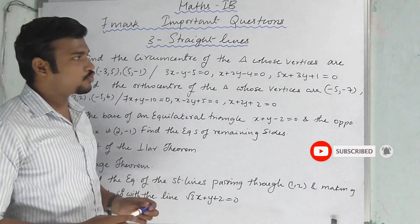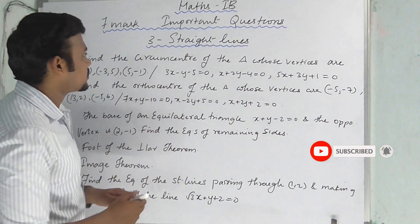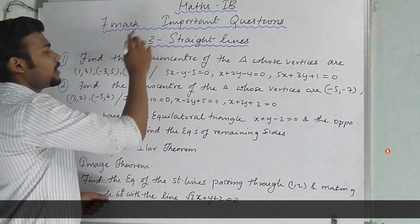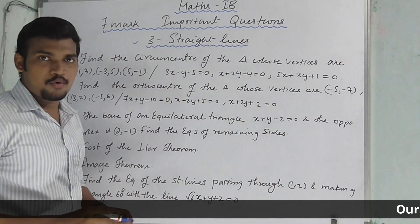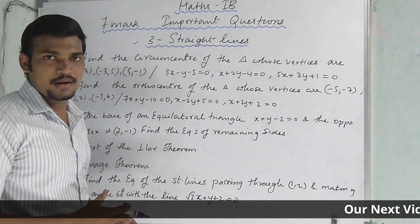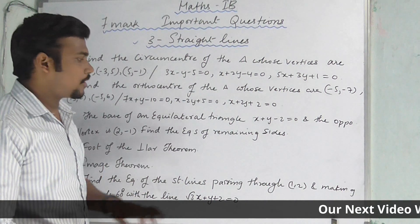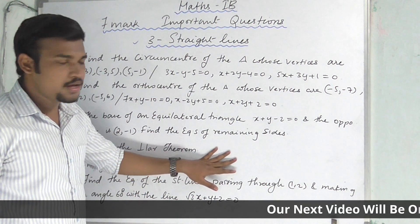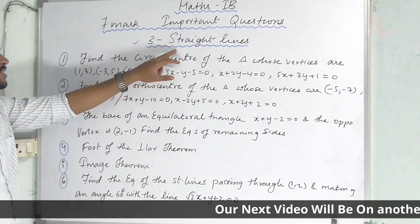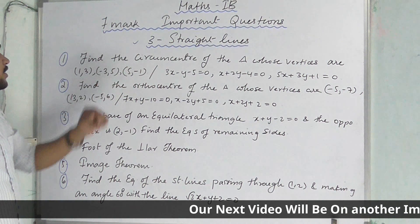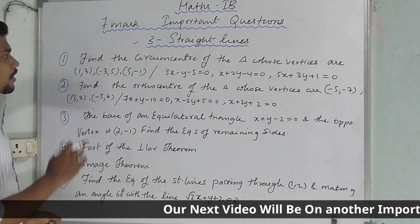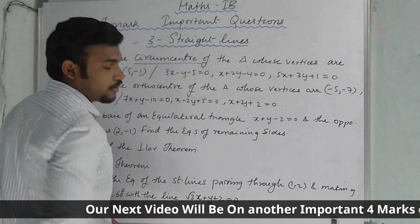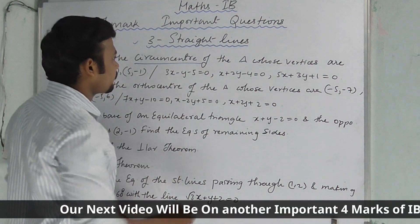Now we are going to cover this 2020 supply — only for supply. We are going to get some important questions in this channel. The first topic is straight lines. Find the circumcenter of the triangle. Circumcenter is one of the best model types we have.